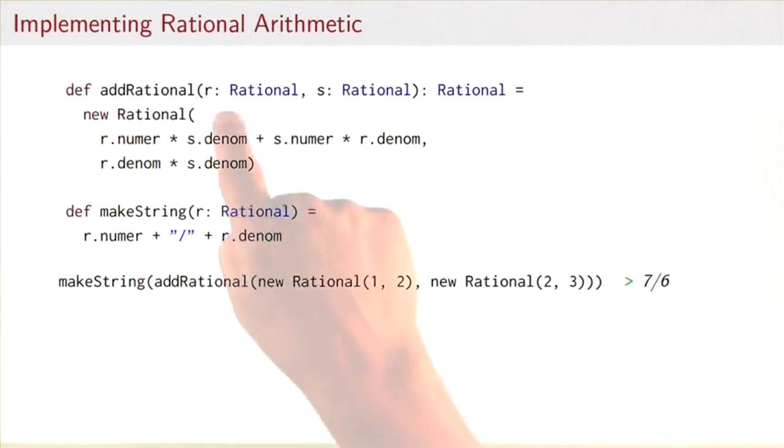So addRational would take two rationals, give you a rational. It would create a new rational according to the mathematical formula that multiplies numerators and denominators of the two rationals. And to make things print nicely, we could also define a makeString function that takes a rational and produces the numerator and denominator separated by a slash.